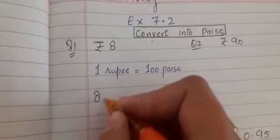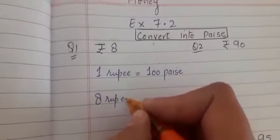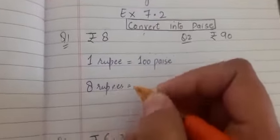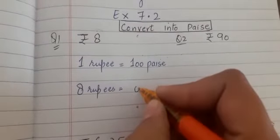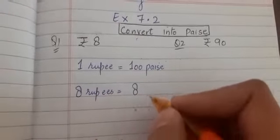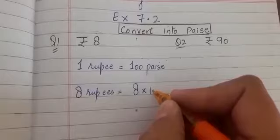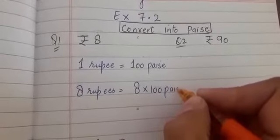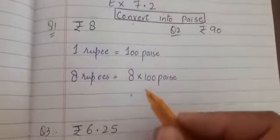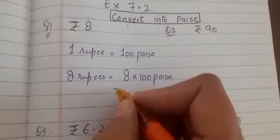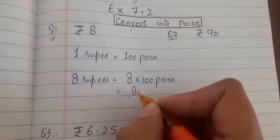So 8 rupees makes how many paise? For that we need to multiply the given number 8 with 100 paise. When you multiply it with 100, you know it is 800.